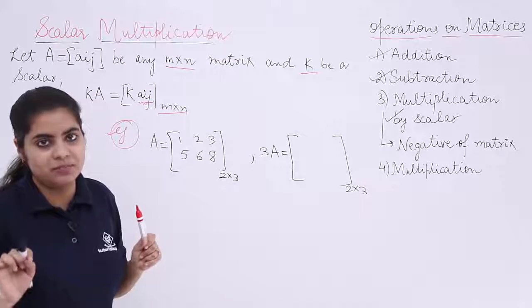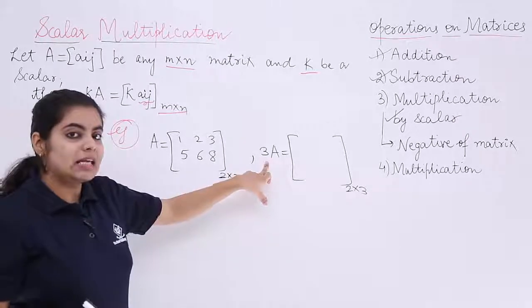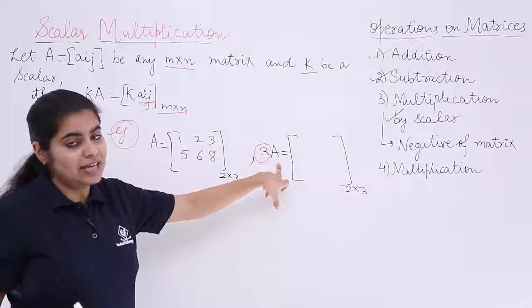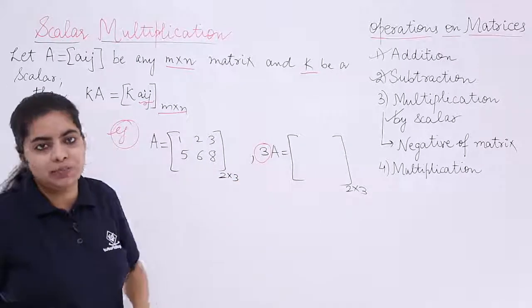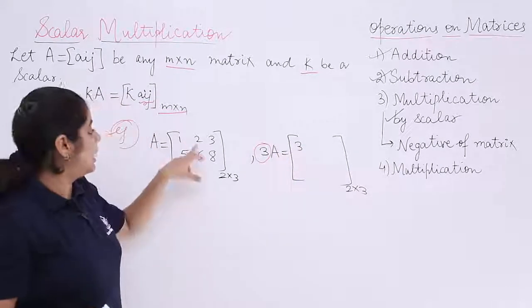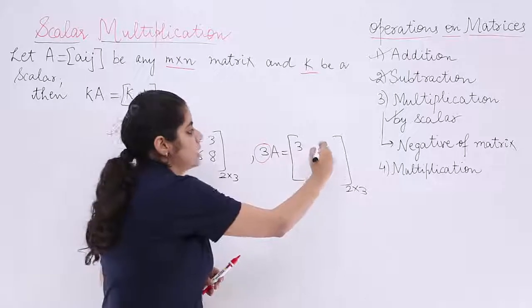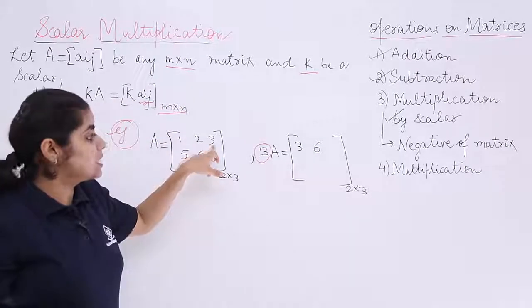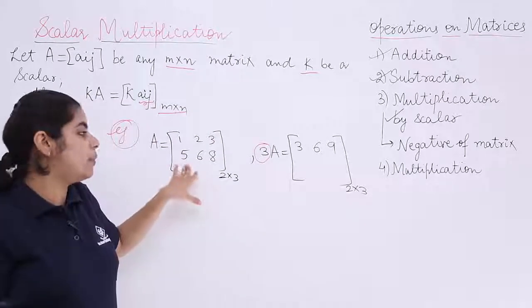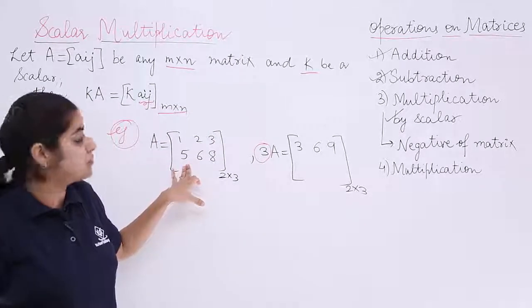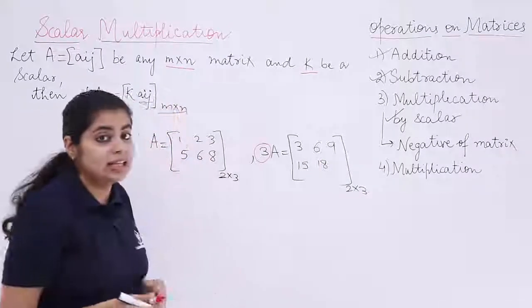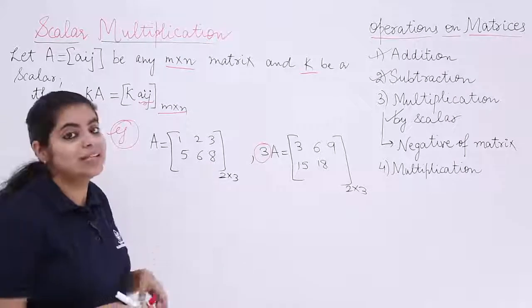Now what is the scalar? Three is the scalar. That means multiply the whole matrix A by that constant scalar three. Multiplying three by one is three, three by two is six, three threes are nine. First row completed. Similarly, complete the second row. Three fives are 15, three sixes are 18. Last element: three eights are 24.